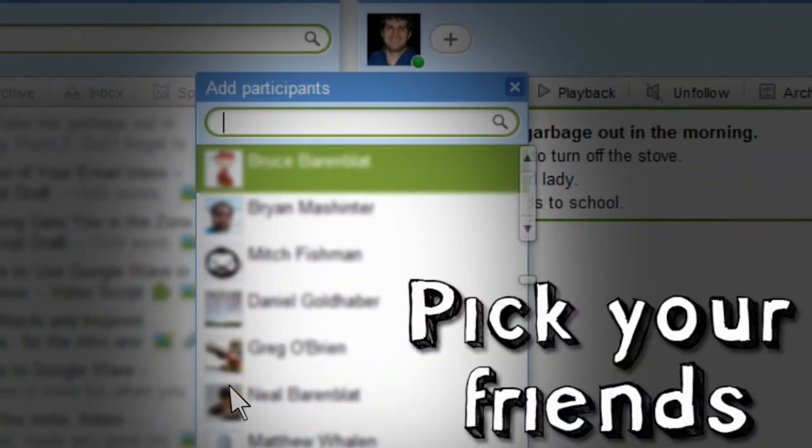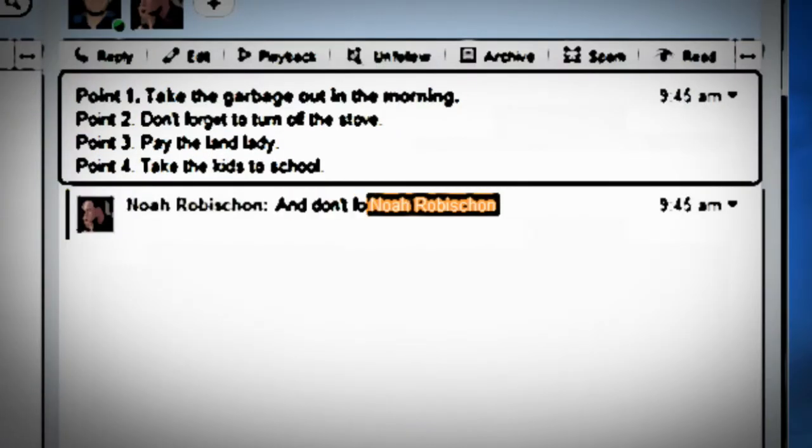If you create one Wave with a list of points, people can go in and chat in the Wave and reply to those points in line in one place.